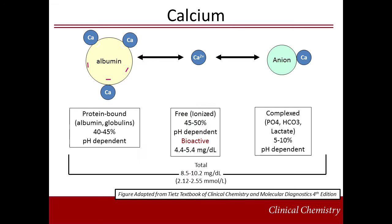The extracellular fluid calcium pool is divided into three different forms. These consist of protein-bound calcium, free or ionized calcium, and anion-bound calcium. The majority of protein-bound calcium is complexed with albumin, the most abundant serum protein, but binding also occurs with other serum globulins.